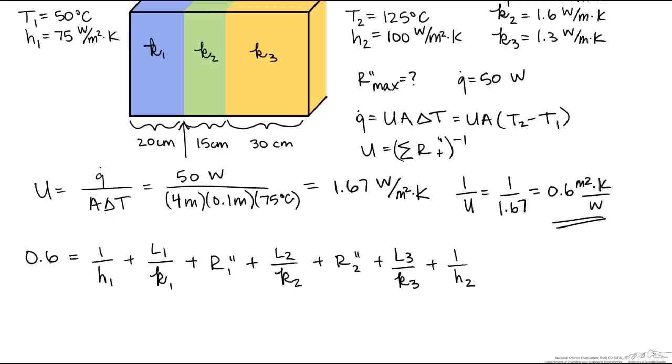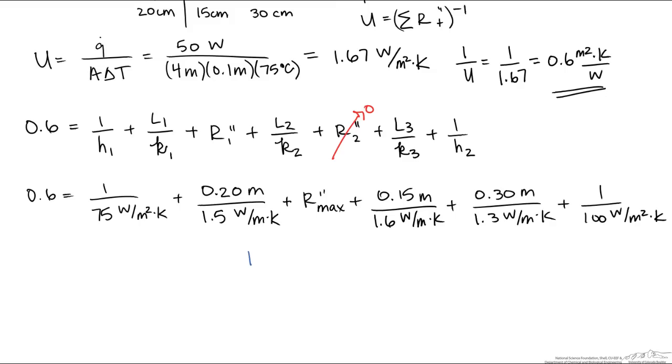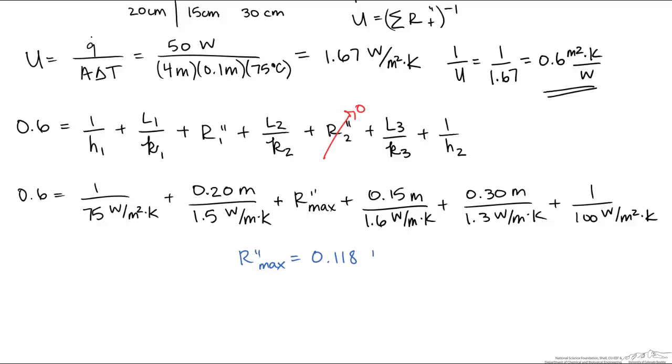Plus our convective resistance on the other side of the wall plus this thermal contact resistance that we are looking for. So when we solve for that, it is going to equal 0.118 meters squared Kelvin per watt.